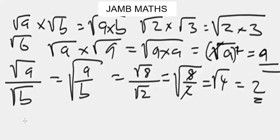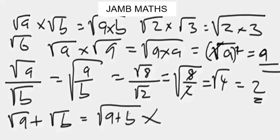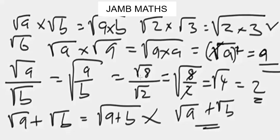Now let's look at the third rule. When we have square root of a plus square root of b, this is NOT the same as square root of a plus b. Be very careful — this is a common mistake. When you have a plus sign between surds, do not combine them under one root. Square root of a plus square root of b just stays as it is.